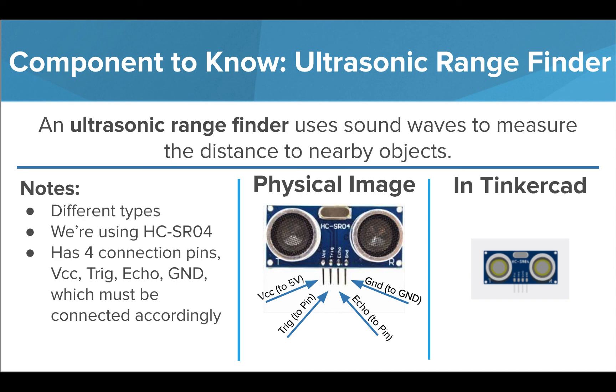To the right of that pin is the trig pin, which will be plugged into an analog pin on your Arduino board, or one of the pins with a tilde next to the number. The next pin to the right is the echo pin, which is connected to another analog pin on the board. And the final pin on the far right of the sensor is labeled GND and will be connected to the ground pin on your Arduino.